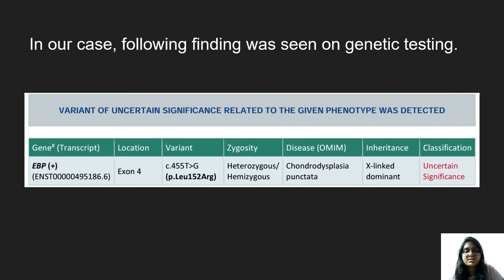In our case, the following findings were seen on genetic testing. The disease was diagnosed as chondrodysplasia punctata. Inheritance was X-linked dominant, and zygosity was heterozygous or hemizygous.